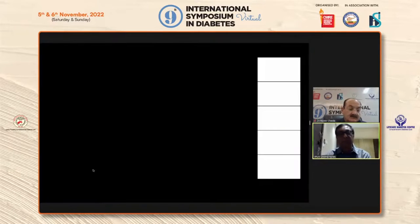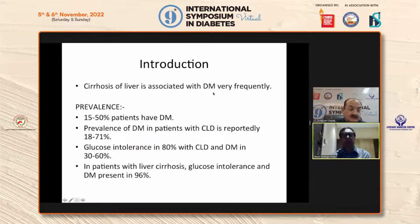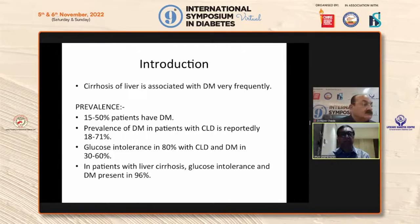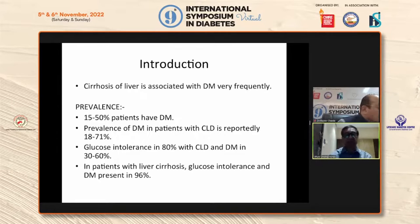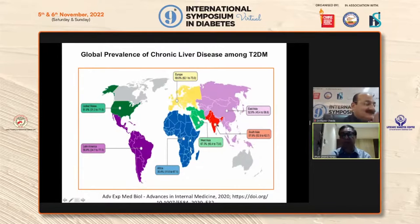I focus on cirrhosis of liver. Cirrhosis of liver is associated with diabetes and we see it very, very frequently. The prevalence is 15 to 50% of patients have diabetes mellitus, and prevalence of diabetes in patients with CLD is reportedly 18 to 71%. Glucose intolerance is 80% with CLD and diabetes being 30 to 60%. In patients with liver cirrhosis, glucose intolerance and diabetes together can present in almost 96% of patients. From Southeast Asia, it's almost 57.9% — very, very high from our own region.